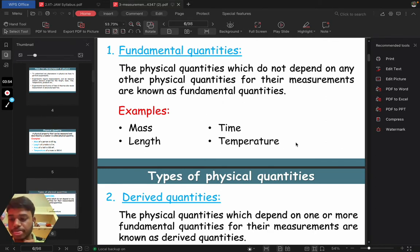The physical quantities which do not depend on any other physical quantities for their measurements are known as fundamental quantities. Like mass. Does mass depend on any other physical quantity for the measurement? No. Similarly for time, length and temperature also. They do not depend on any other physical quantity. So they are fundamental quantities.